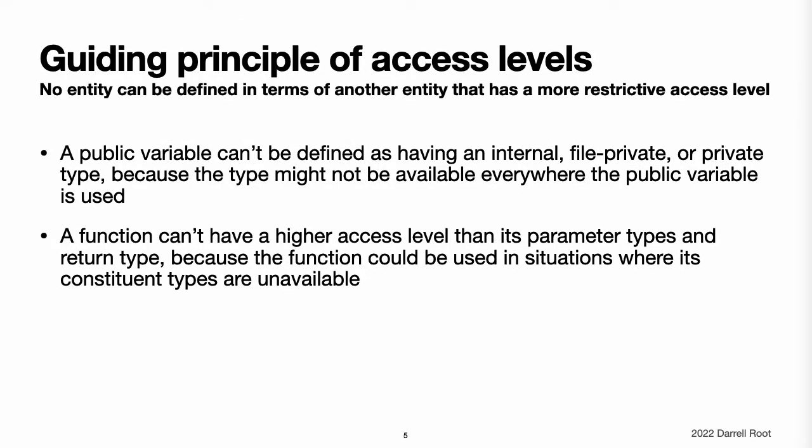Guiding principle of access levels. Access levels in Swift follow an overall guiding principle: no entity can be defined in terms of another entity that has a lower, more restrictive access level. For example, a public variable cannot be defined as having an internal, file private, or private type because the type might not be available everywhere that the public variable is used. A function cannot have a higher access level than its parameter types and return type because the function could be used in situations where its constituent types are unavailable to the surrounding code. The specific implications of this guiding principle for different aspects of the language are covered in detail below.